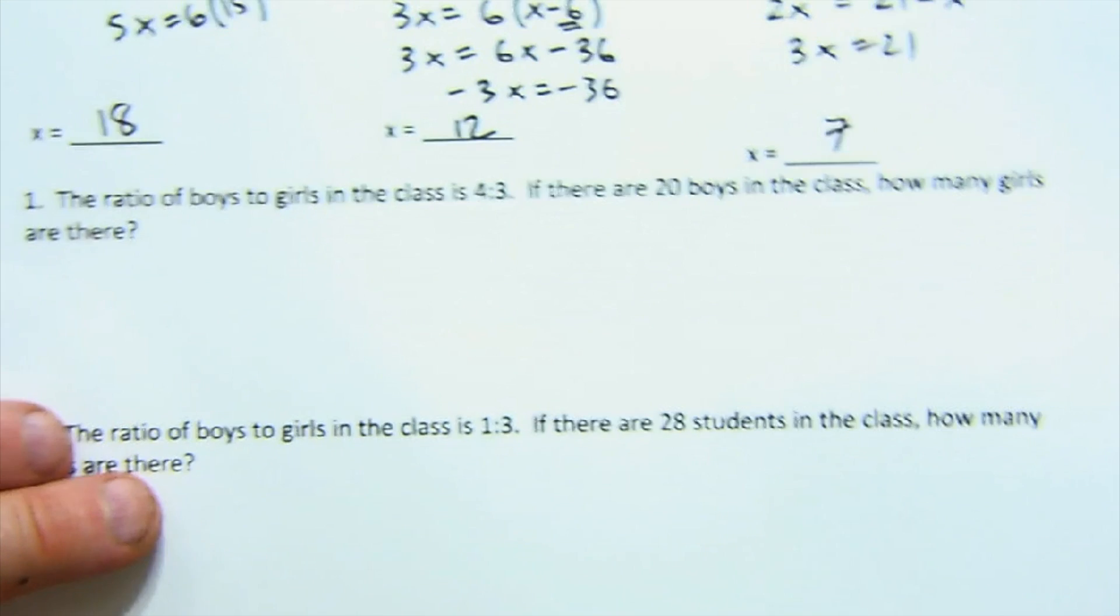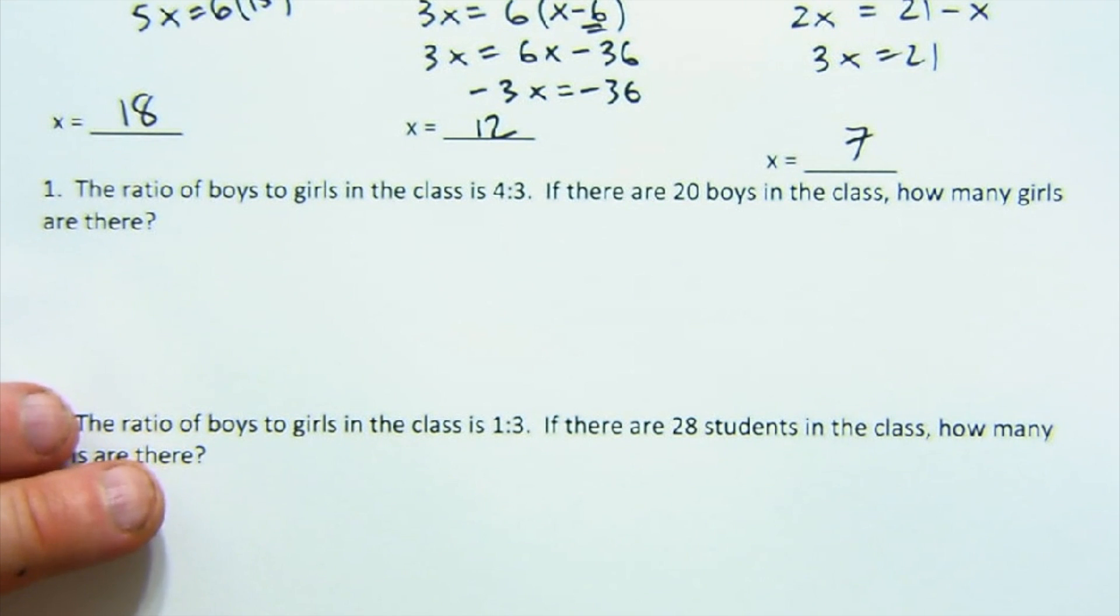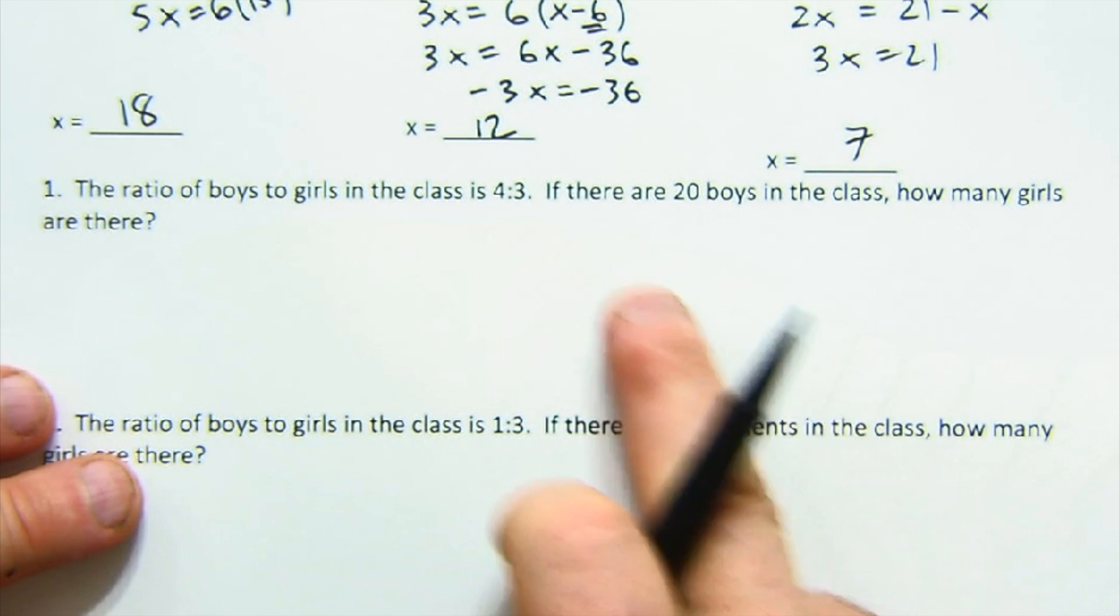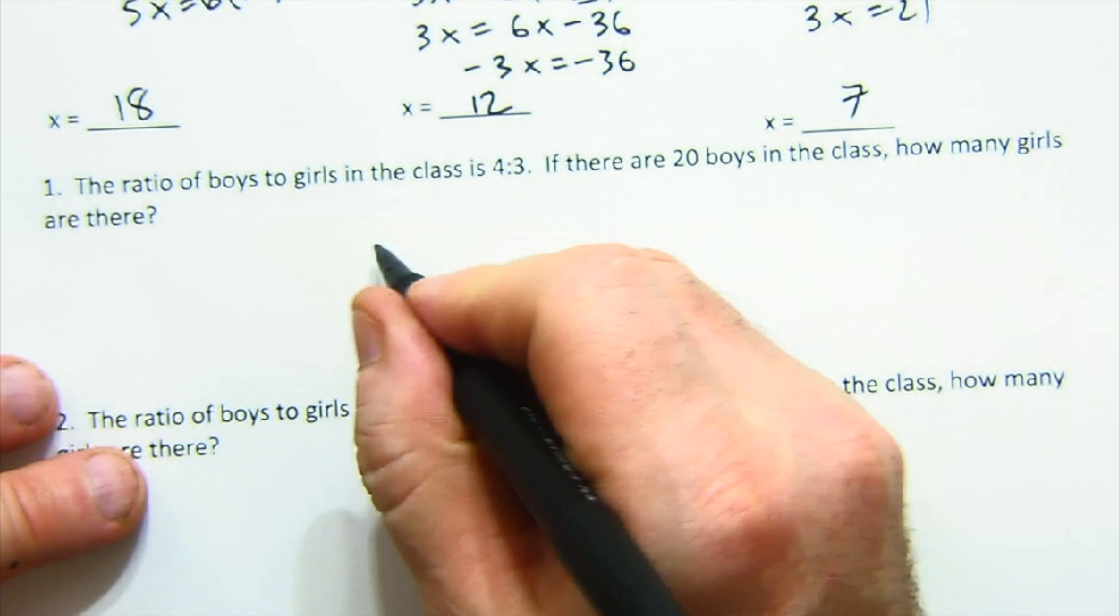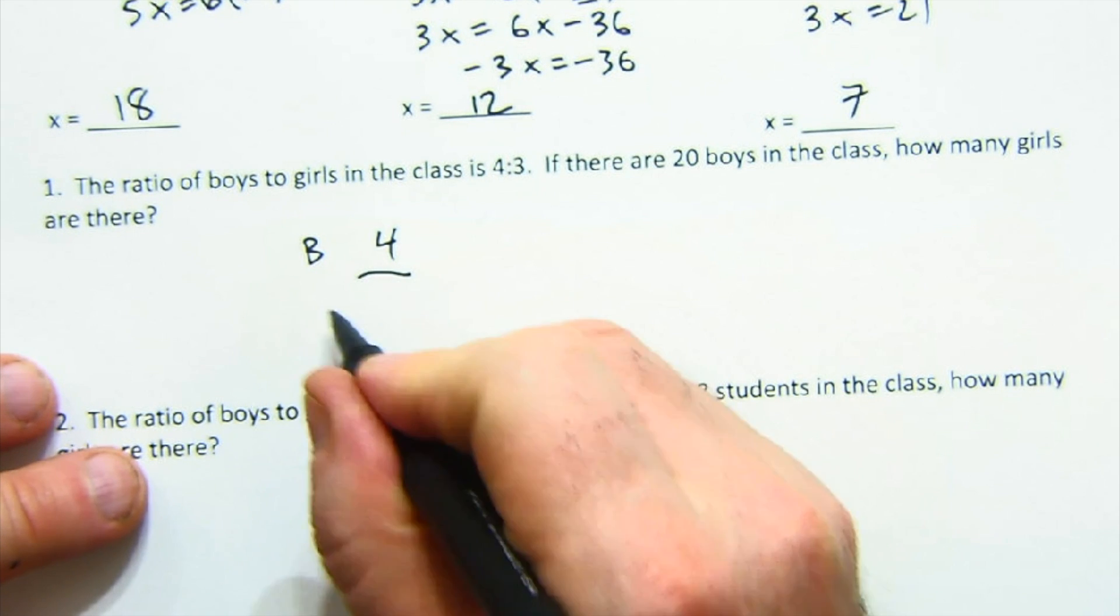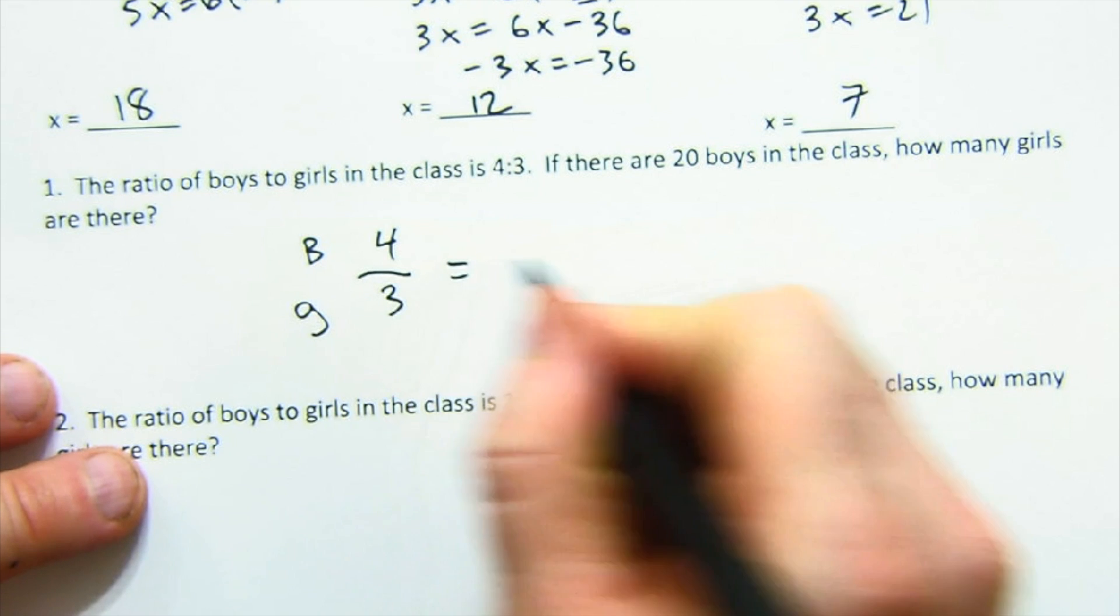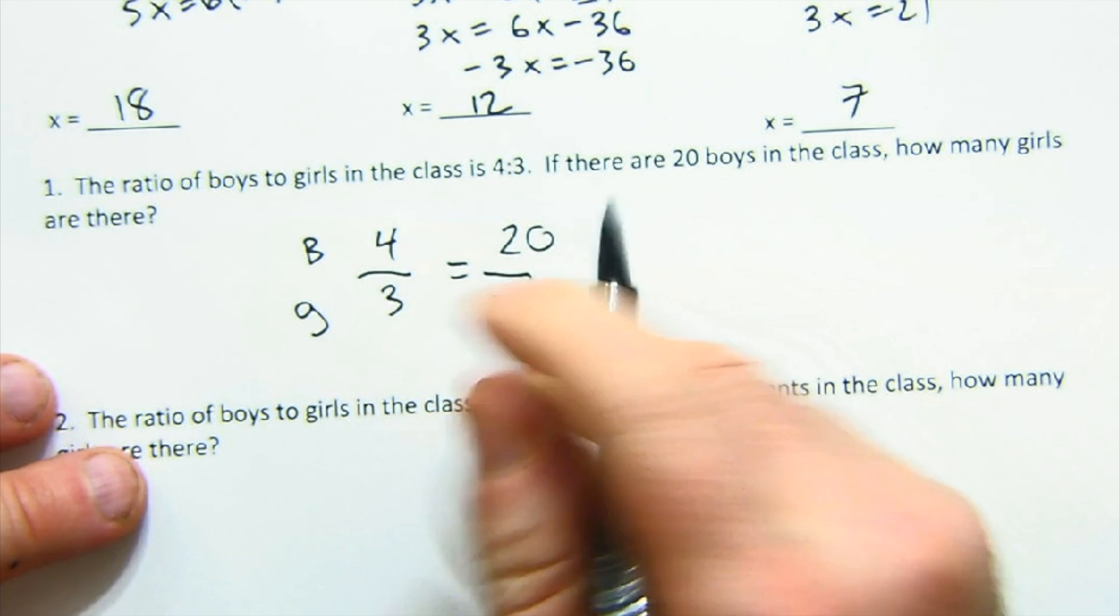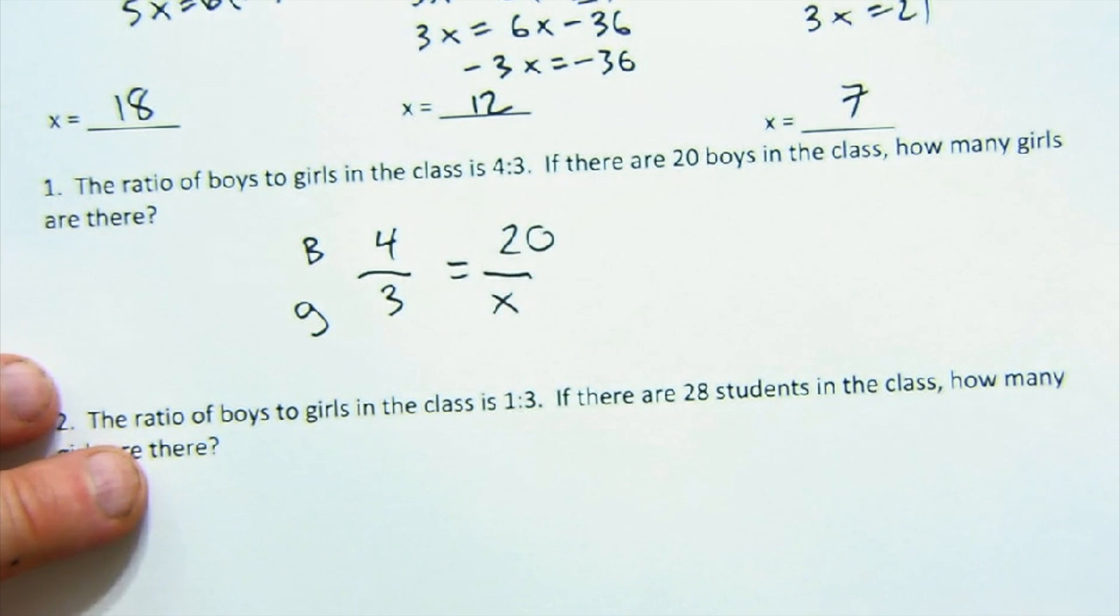Now the next step - I'm not going to solve all these but I'll help you set them up. Ratios and proportions can often be done many ways, so don't get locked into one way. It says the ratio of boys to girls is 4 to 3. There's 20 boys in the class. How many girls? I always like to put what it is on the side - boys to girls - and then it says there are 20 boys and how many girls. This is a very easy setup.